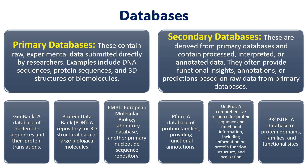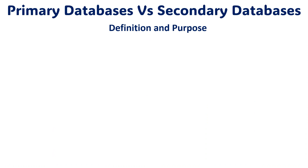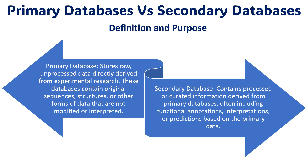These are the different types of databases we have. Now, looking at the comparison of primary and secondary databases with specific criteria: the first is definition and purpose. Primary databases store raw, unprocessed data directly derived from experimental research — original sequences, original structures, and other forms of data in unprocessed, unmodified raw forms. Secondary databases contain processed and curated information derived from primary databases, including functional annotations, interpretations, and predictions based on primary data.